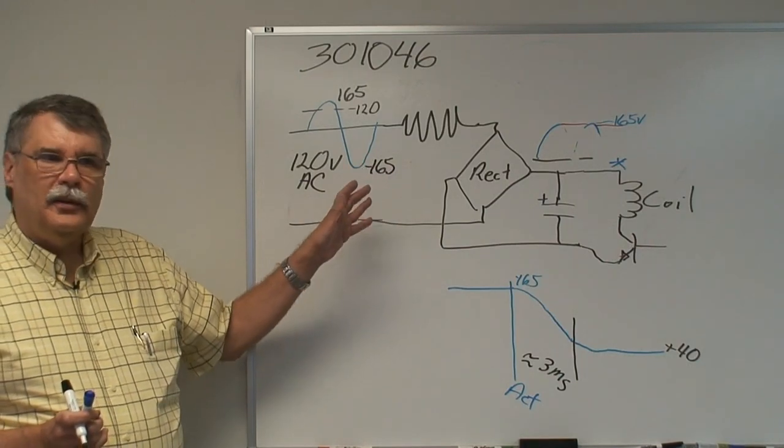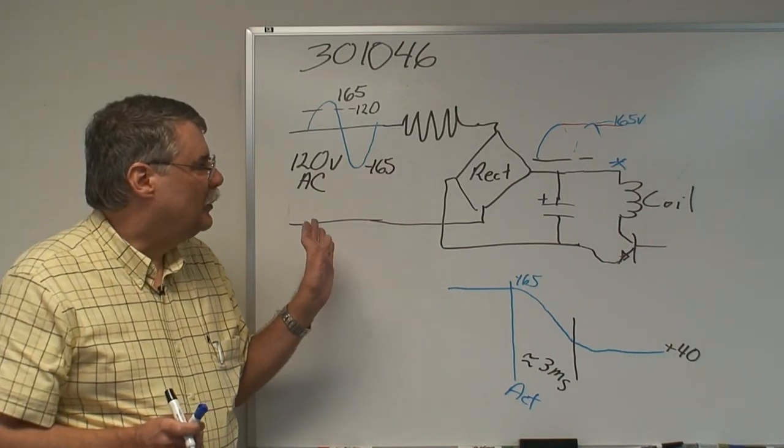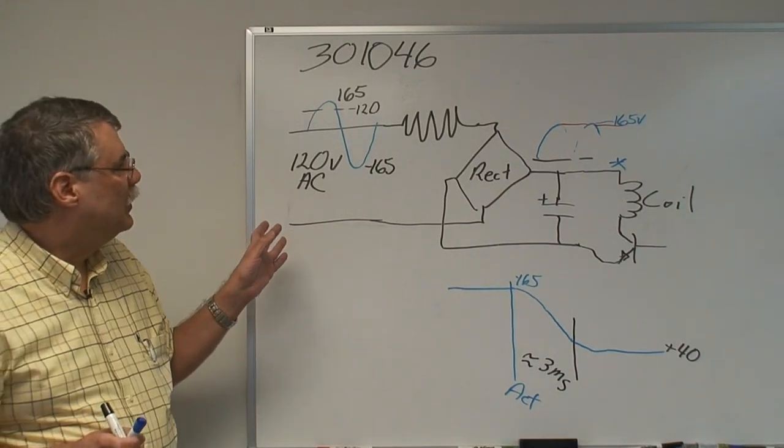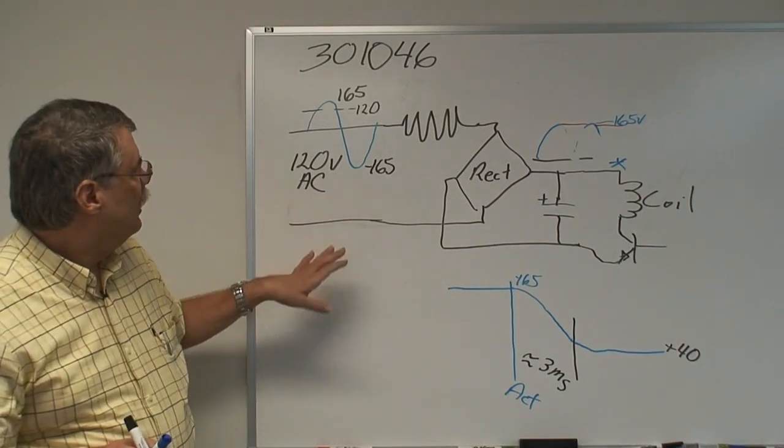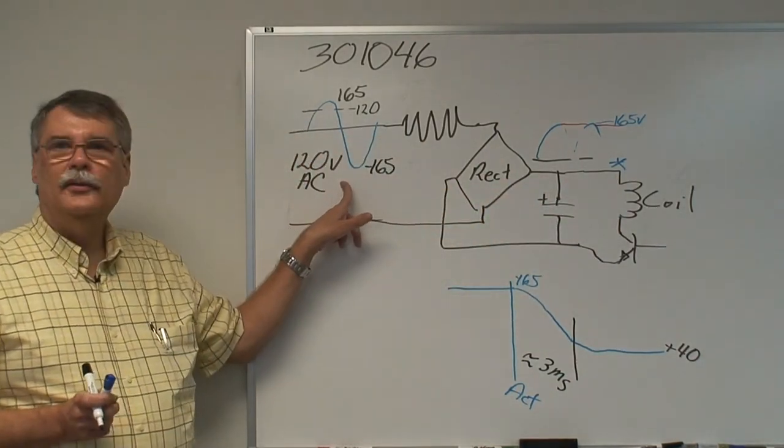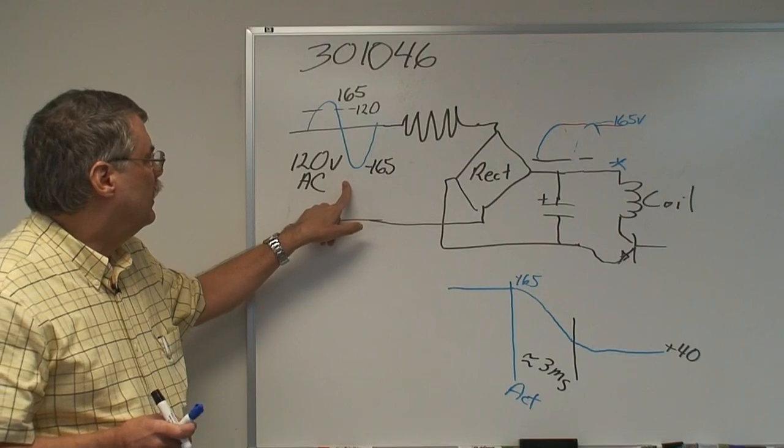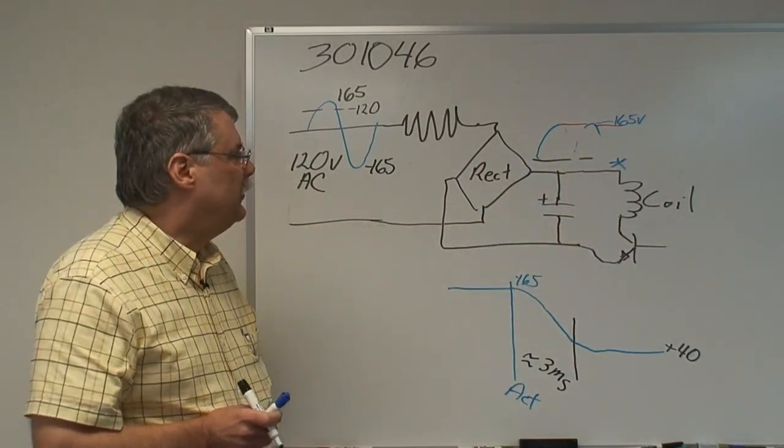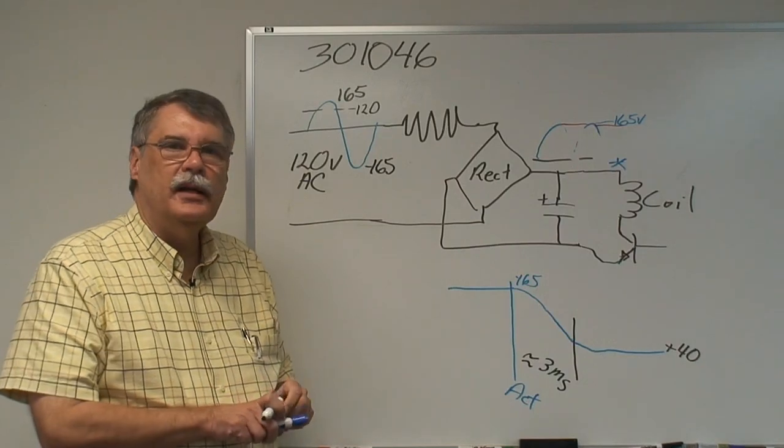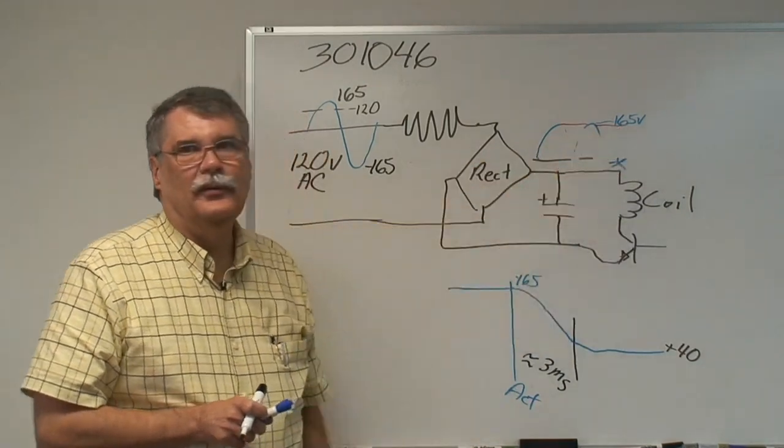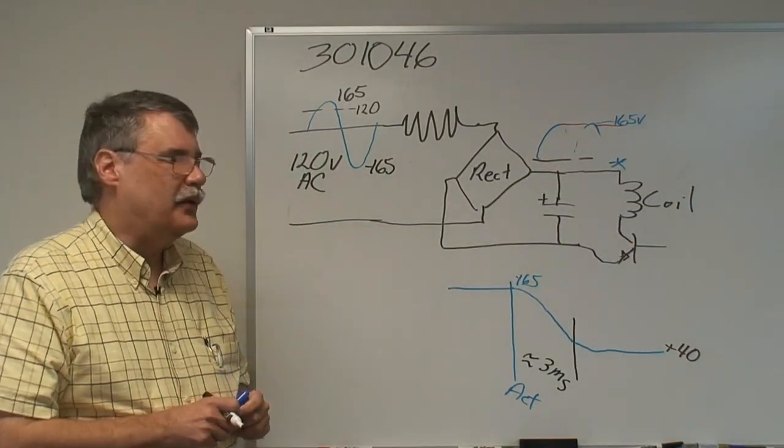This is a great gun driver. It's pretty simple. There's not much to it. But it has one really big disadvantage. Well, really two. First of all, the coil is connected directly to the 120 volt power line. So everything out here has to have enough insulation and safety and ratings for the 120 volts plus the 165 because they actually end up adding together.